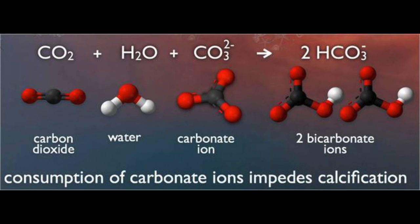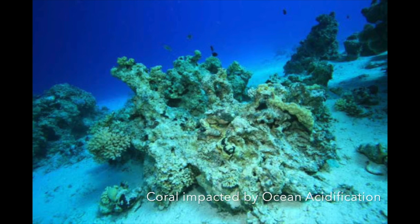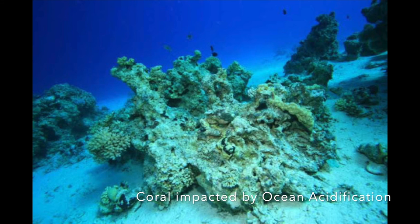When ocean acidification occurs, another problem it causes is a decrease in the abundance of carbonate ions. Carbonate ions are important because they are the building blocks of structures such as shells and coral. If pH gets too low in the ocean, the shells of animals and coral can begin to dissolve or not fully form. Ocean acidification limits coral growth by corroding pre-existing coral skeletons while simultaneously slowing the growth of new ones.